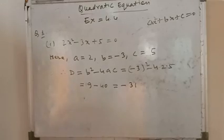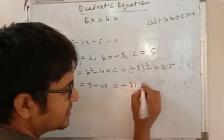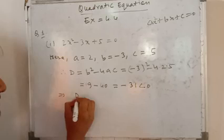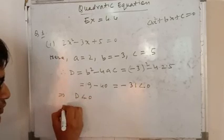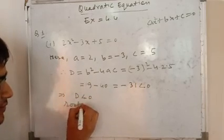This equals to -31. So clearly you see 9 minus 40 equals -31 is less than 0. This implies D is less than 0, means roots are...